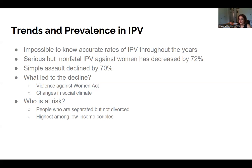Research has found that employment instability and financial strain may be contributing factors to IPV, which could potentially explain why lower-income couples or those with less education may experience it more. That's not the case for everyone, and we're still trying to sort out the reasons for these trends.